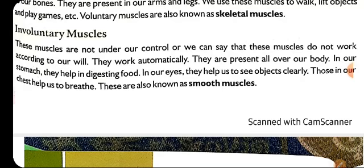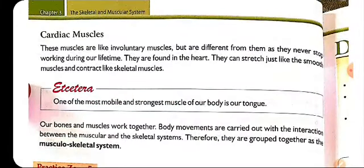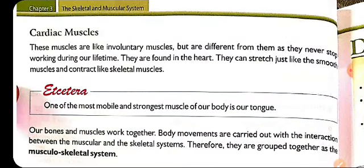The third category is cardiac muscles. These are also like involuntary muscles — they are not under our control — but they are different from them. They never stop working. The stomach can stop working when there is no food present, but cardiac muscles continuously work regardless. They are present in the heart — the heart keeps on pumping blood from the very start of our birth until we are alive. So cardiac muscles work continuously and do not stop working during our lifetime.